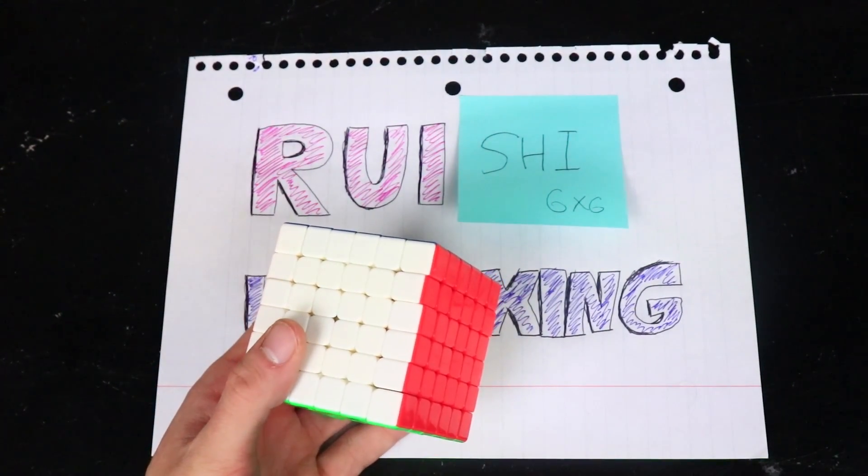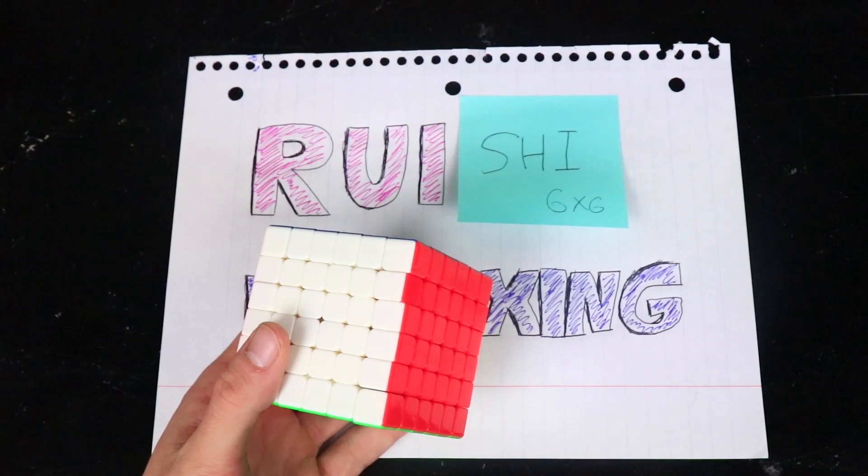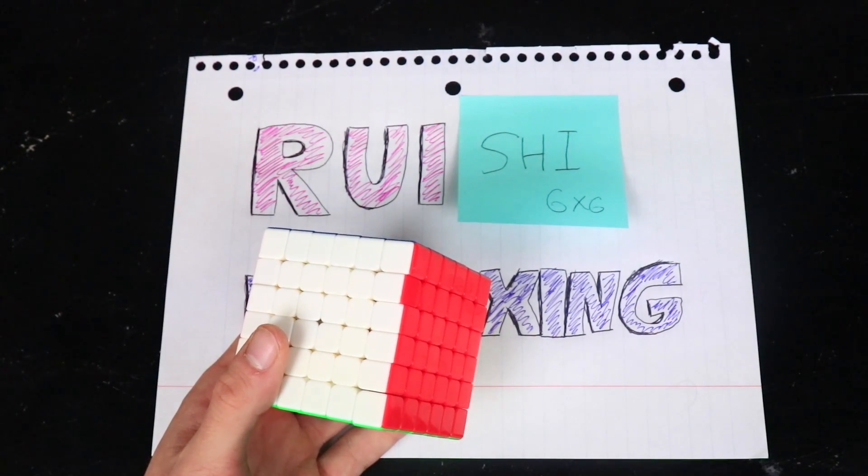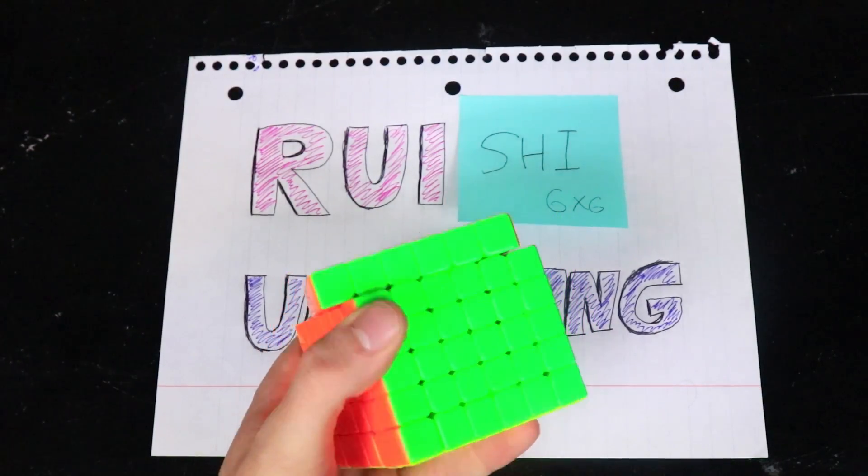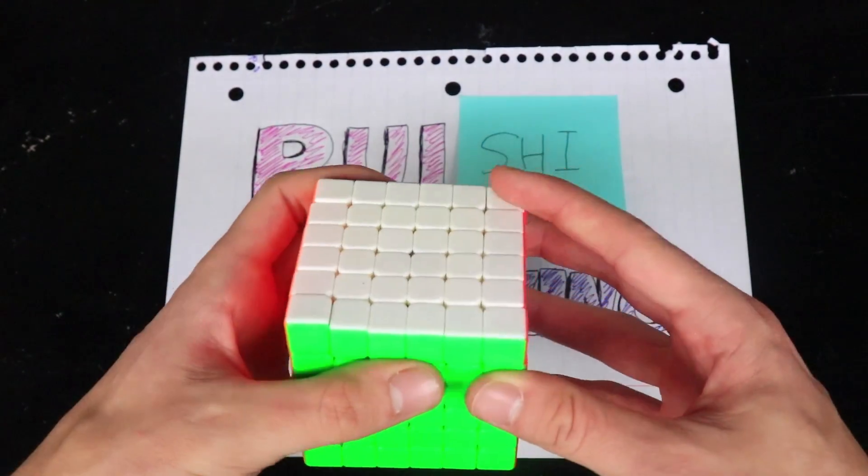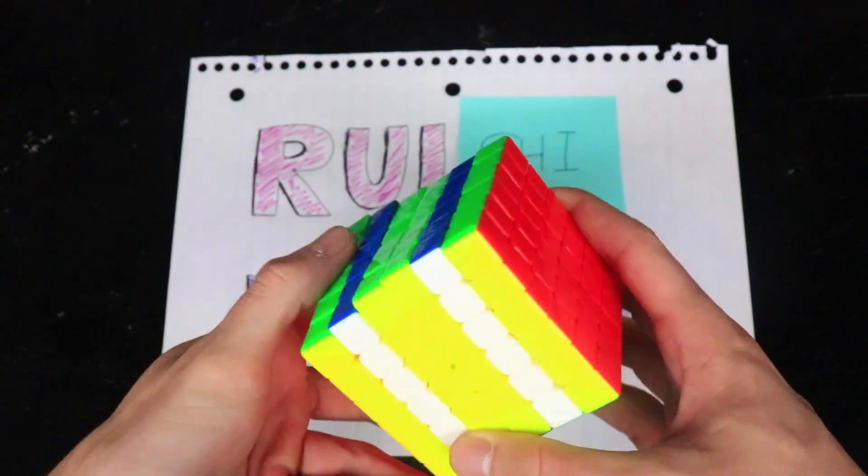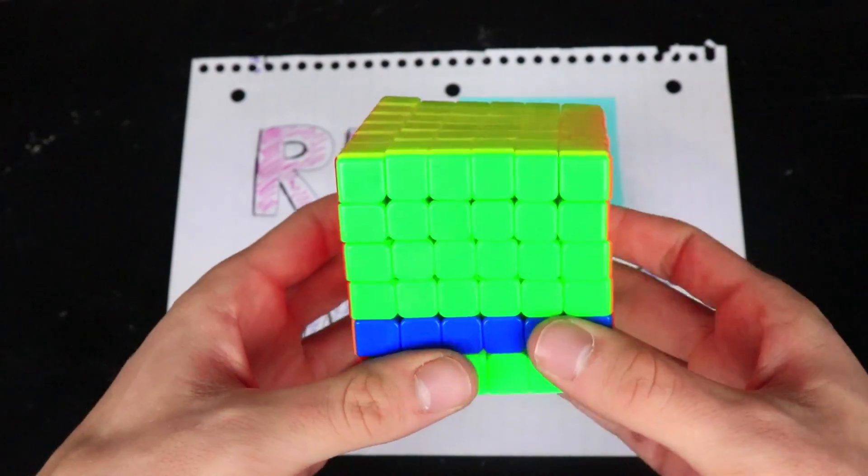The Ruey cubes are just the—I'm trying to think of something that rhymes with Ruey that is also not good. Thinking the Stewie cubes, like stupid cubes, but I'm not really feeling that. I have no idea.